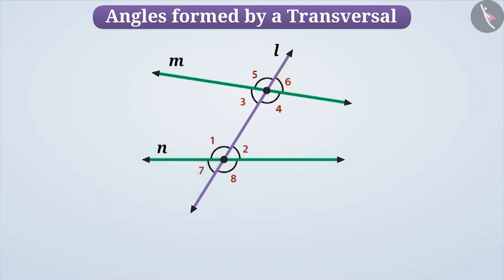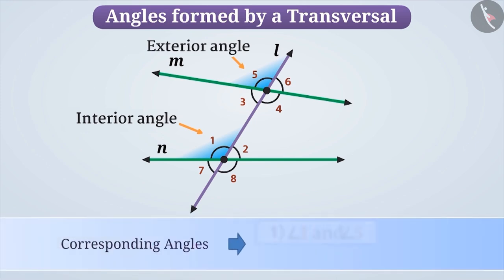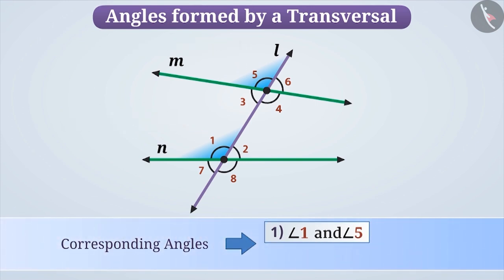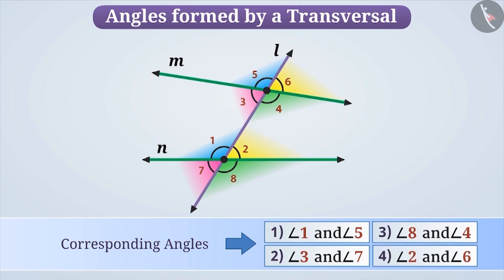Now, let us consider angle 1 and angle 5. Both have a different vertex and both are on the same side of the transversal, but one of them is an interior angle and the other is an exterior angle. Such angles are called corresponding angles. Other pairs of corresponding angles are: angle 3 and angle 7, angle 8 and angle 4, and angle 2 and angle 6.